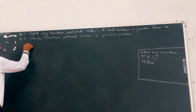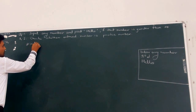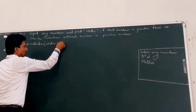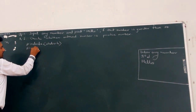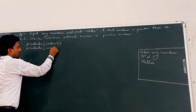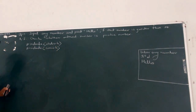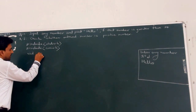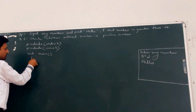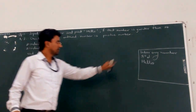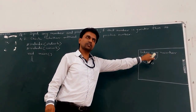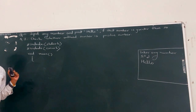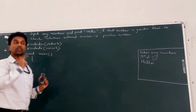Start writing the code. First, include two header files: stdio.h and conio.h. Start with the main function — void main. The first thing is to give the message on the console using printf. The printf statement is not a control statement; the if statement is a control statement — a selection statement — because depending on the condition, we can select the body of if or not.